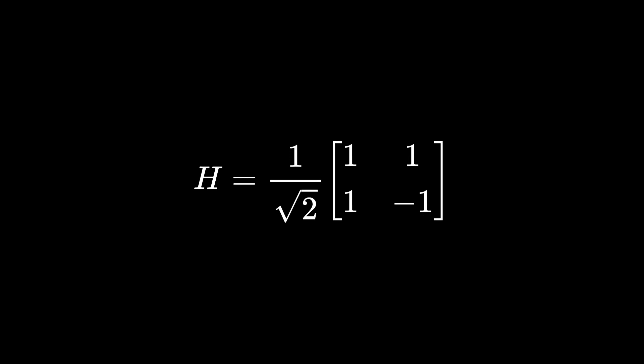The Hadamard gate is represented by a two by two matrix considered within the set of complex numbers, although its entries are real numbers.